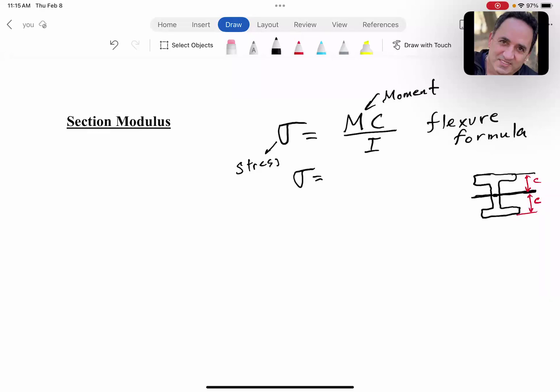If we rearrange this equation, writing it as σ = M/(I/C), this ratio I/C is known as the section modulus and is denoted by S. So section modulus is the ratio of I divided by C. If I call this S, the equation becomes σ = M/S. So you can calculate bending stress based on this formula.